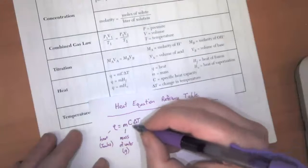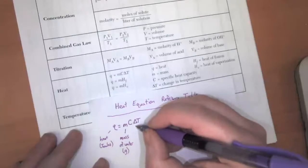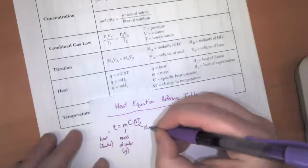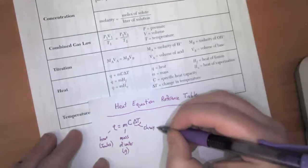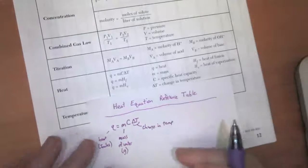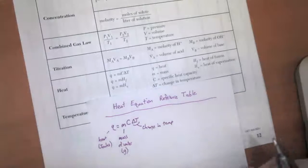Then we've got delta T. Delta T is talking about the change in temperature. So we're either heating the water up or we're cooling it down.